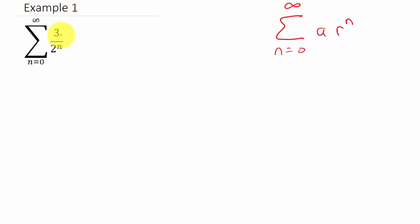So I need to rewrite this so that it looks like this. I can rewrite this as the sum n equals zero to infinity, and I'm going to separate the three and the one over two to the n. So now I have three times one over two to the n power.